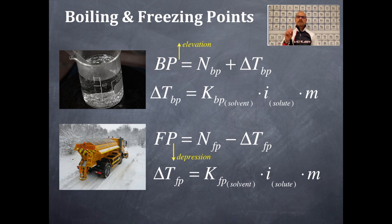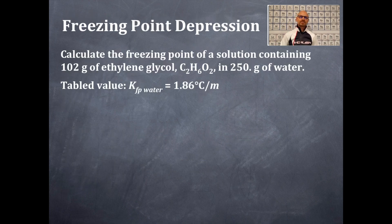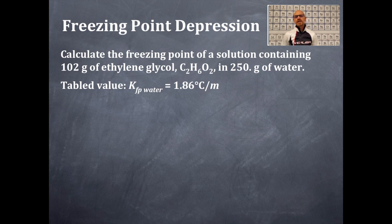We're going to do two problems — one is a boiling point and one is a freezing point problem. Freezing point depression: calculate the freezing point of a solution containing 102 grams of ethylene glycol, that's C₂H₆O₂, in 250 grams of water.